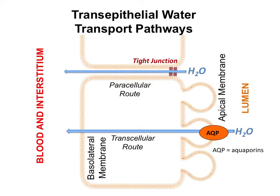Focusing on water movement with the lumen on one side and the blood-interstitium on the other: sodium is high in the interstitial space, and water can move through the tight junctions down into the interstitium by the paracellular route. Alternatively, water can move across the cell via aquaporins, which are regulated in the cell membrane, allowing water to pass through following this osmotic gradient.